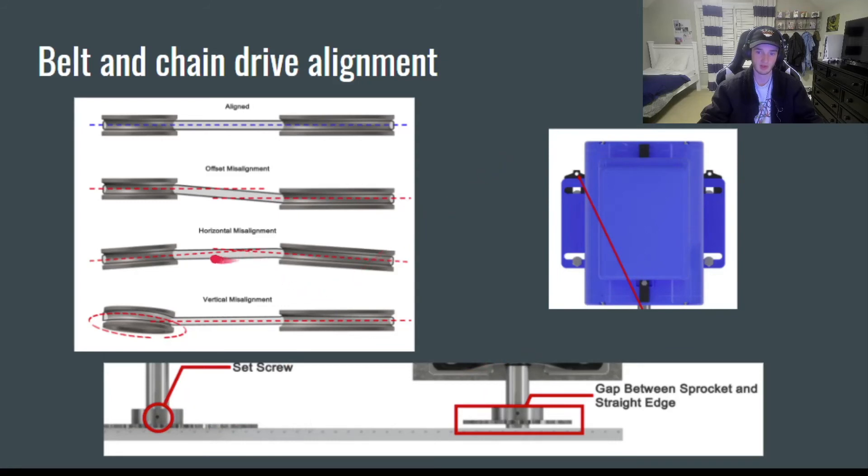For horizontal misalignment, the angular version, which is this one right here, you're going to do basically the same thing. You're going to loosen these set screws and adjust to make them parallel to each other.